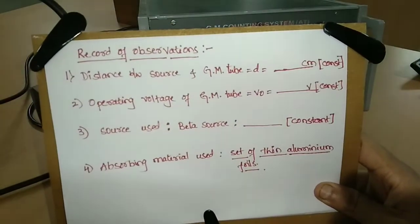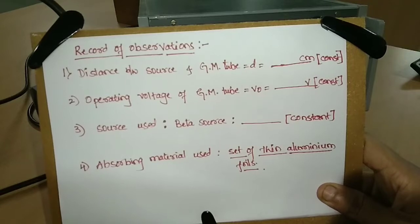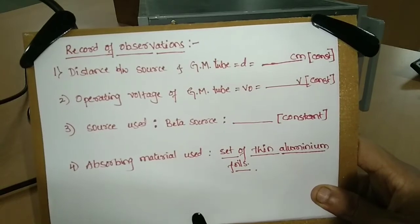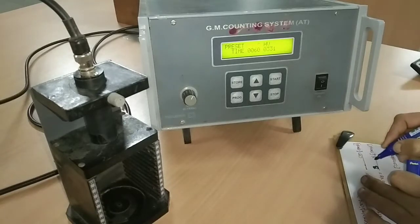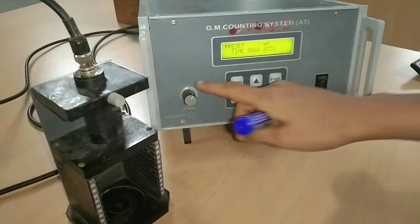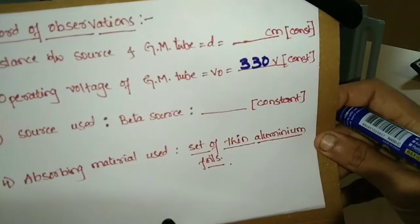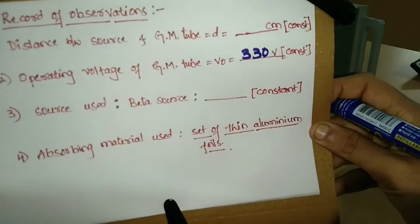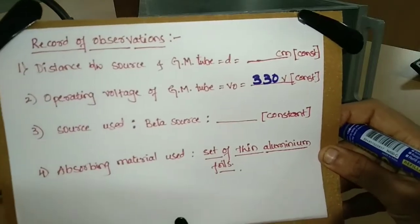Next is the record of observation. We must note: the distance D between the source and GM tube; the operating voltage V₀ of the GM tube, which we have set at 330V; the type of source used — whether beta, alpha, or gamma, and whether cesium or tellurium; and the absorbing material, which is the set of thin aluminum foils provided.